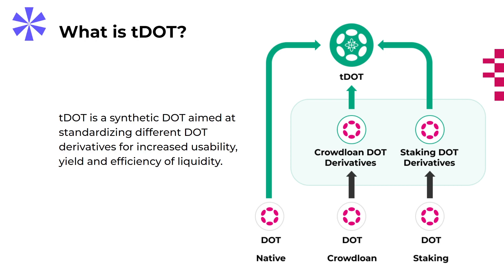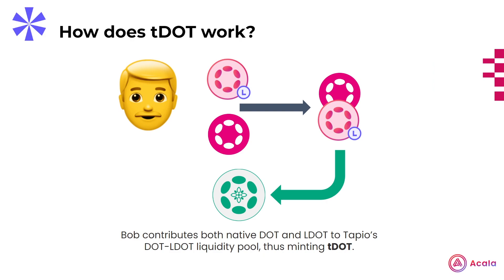Now that sounds great, but how does it actually work? Let's break it down. TDOT is first minted by providing both a DOT and a DOT derivative into a dedicated liquidity pool. For example, on Akala, you can currently contribute DOT and liquid staked DOT, or LDOT, into the Tapio pool where you will receive TDOT in return.